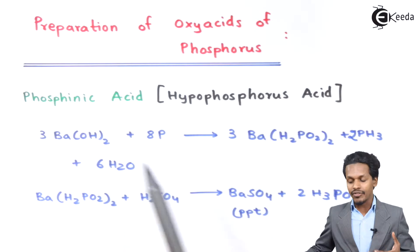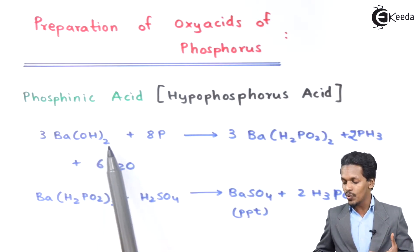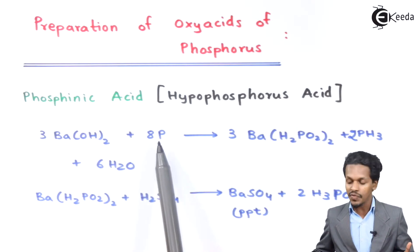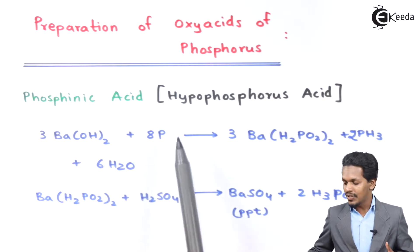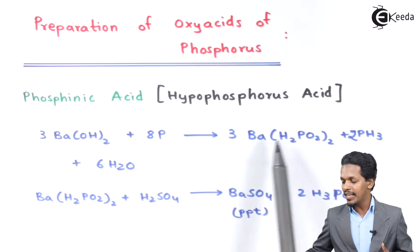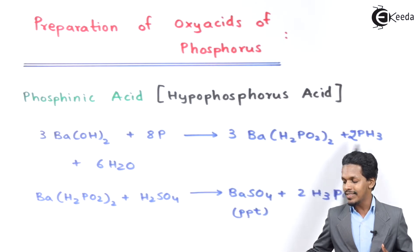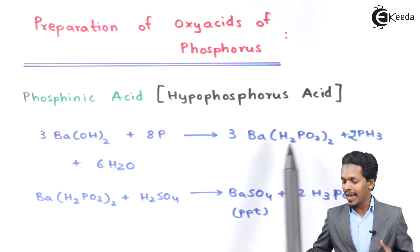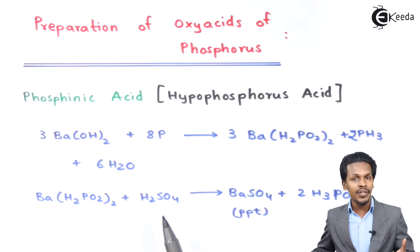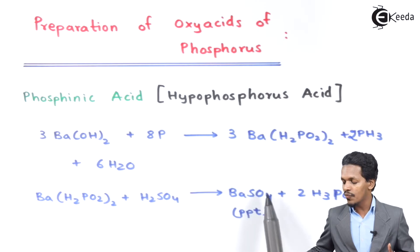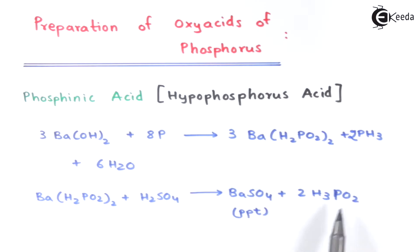For the preparation of Hypophosphorous Acid, we react Ba(OH)₂ with Phosphorus in the presence of water. This gives Ba(H₂PO₂)₂ along with Phosphine (PH₃). The Ba(H₂PO₂)₂ is a precipitate, which is further treated with H₂SO₄, giving BaSO₄ as a precipitate and H₃PO₂, which is Hypophosphorous Acid.